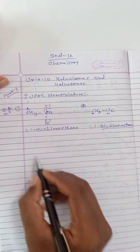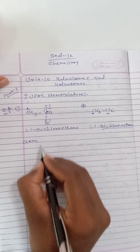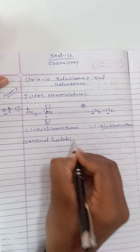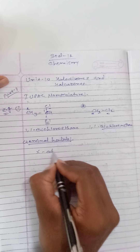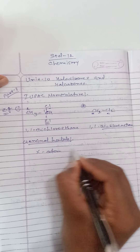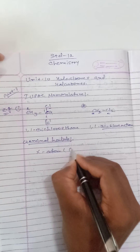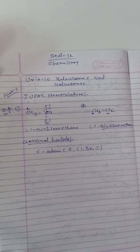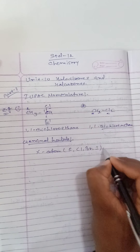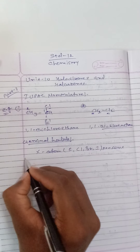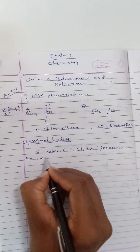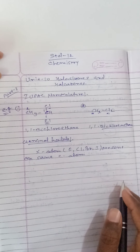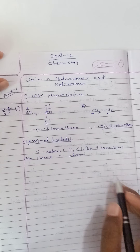This structure, where two chlorine atoms are attached to only one carbon, is called a geminal halide or gem halide. A geminal halide is one where halogen atoms — like chlorine, bromine, or iodine — are present on the same carbon atom.